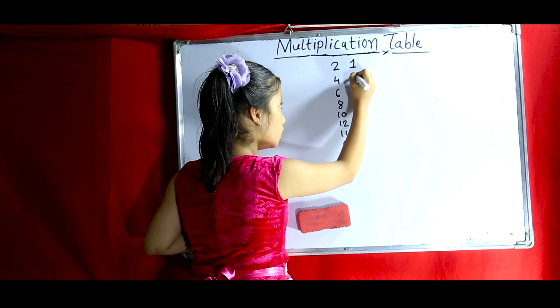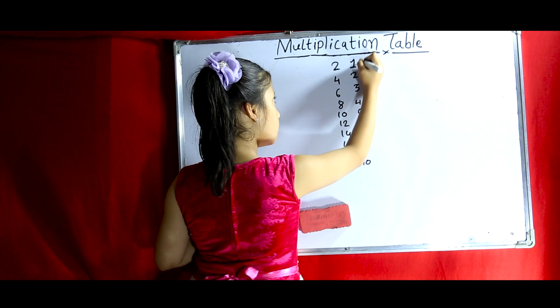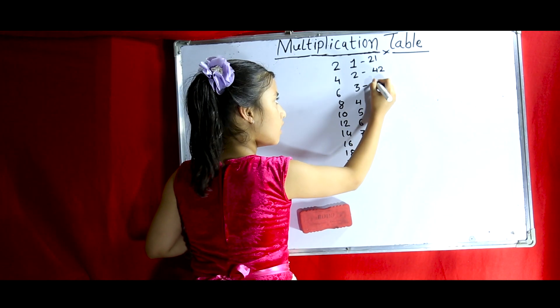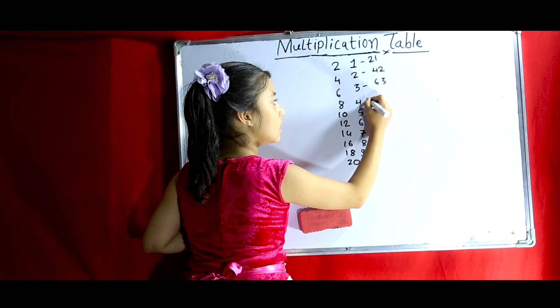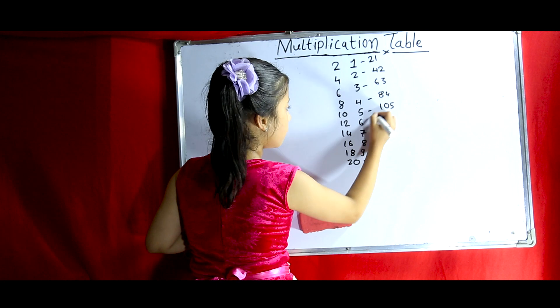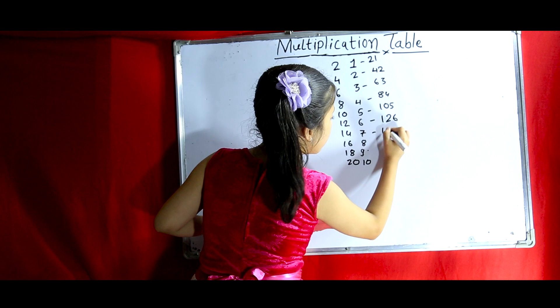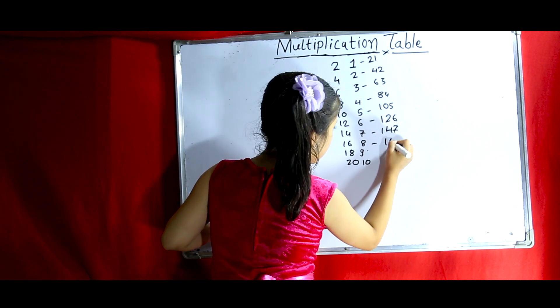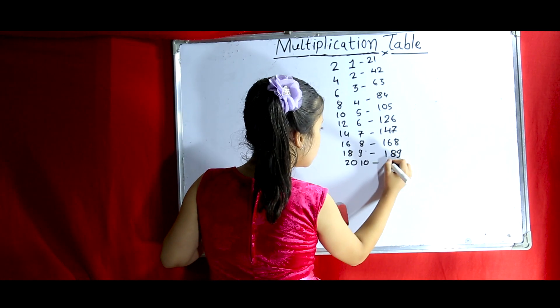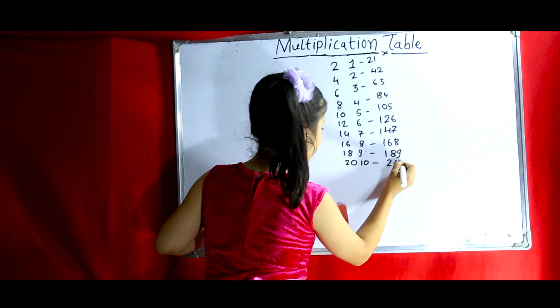Now let's try the table of 1 and copy it. So this is the new technique of 21, 42, 63, 84, 105, 126, 147, 168, 189. The last one is 210.